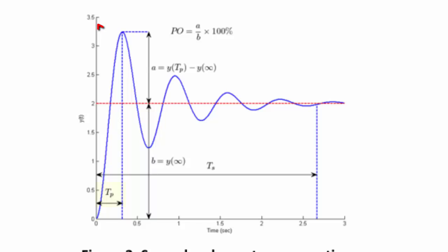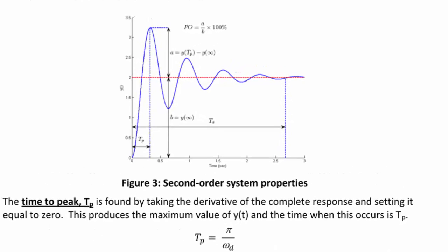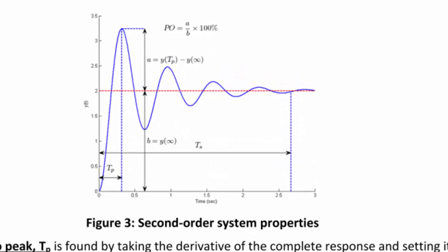On the graph in Figure 3, the time to peak is shown. The percent overshoot is the difference between the maximum value of y(t) and the steady-state value as a percentage of the steady-state value — written as (a/b) × 100%, or equivalently e^(−ζπ/√(1 − ζ²)) × 100.